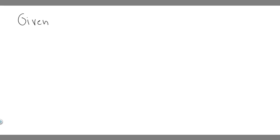We're given a bunch of things here, so let's write them down. We're told the saw blade has a diameter of 0.2 meters. It's starting from rest, so this thing is going to be rotating in a circle. The initial angular velocity is 0 radians per second, because it starts from rest. It's going to travel for 6 seconds and then accelerate to an angular velocity of 140 radians per second.